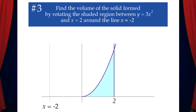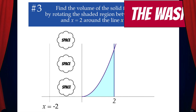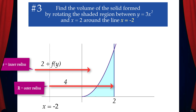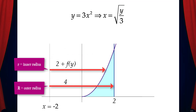Example 3: Find the volume of the solid formed by rotating the shaded region between y equals 3x squared and x equals 2 around the line x equals negative 2. This is the same region as the previous example, but we're now rotating it around a different axis. Note that there's space between the axis of revolution and the region, so we'll use the washer method. The outer radius is always 4 units from the axis of revolution, but the inner radius depends on f of y and that radius is 2 plus f of y, since the distance from the axis of revolution to the y-axis is 2 and the distance from the y-axis to the curve is f of y. So x equals the square root of y over 3, which is f of y.